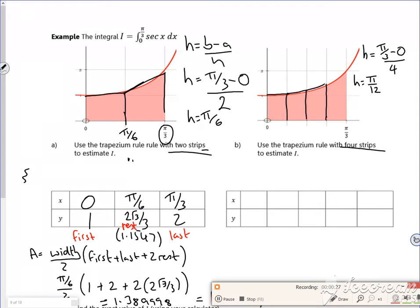Right, so I'm going up in π/12s, aren't I? So 0, π/12, 2π/12 which is π/6, 3π/12 which is π/4, and then 4π/12 which is π/3.